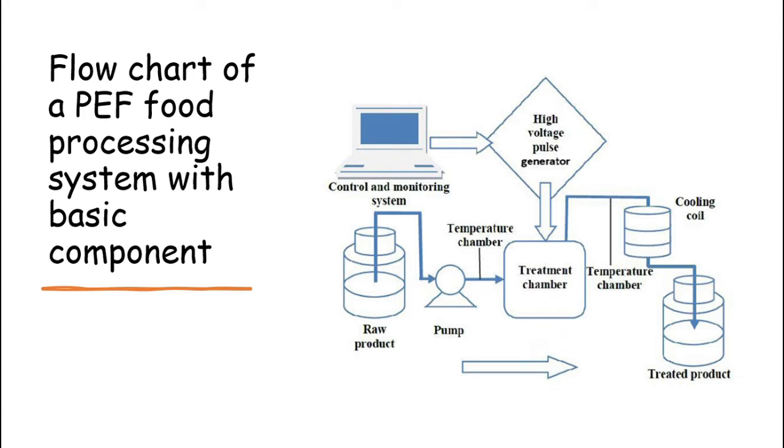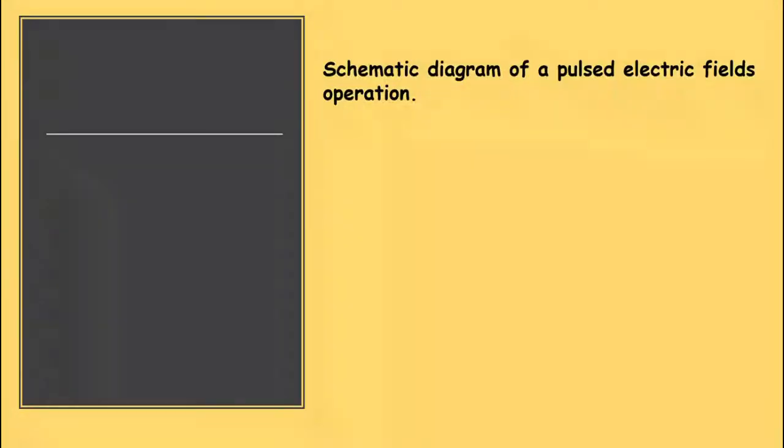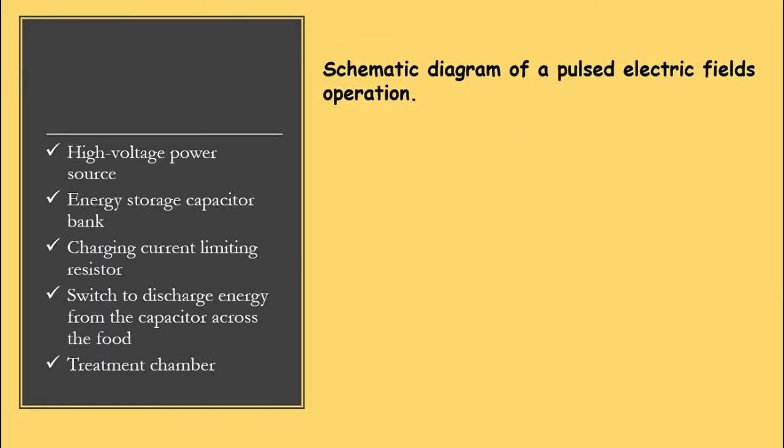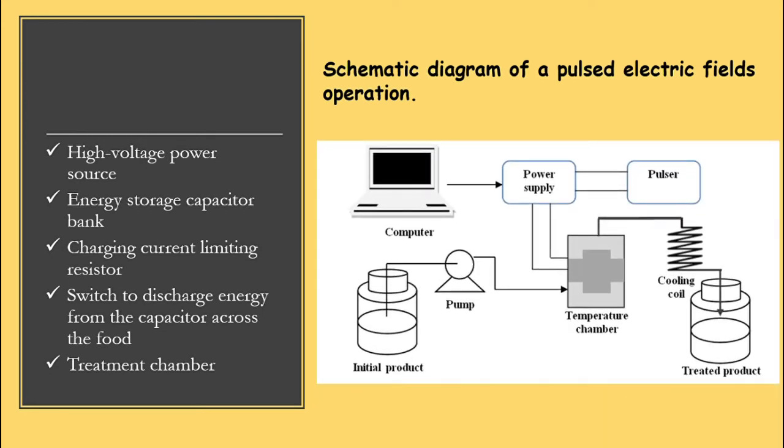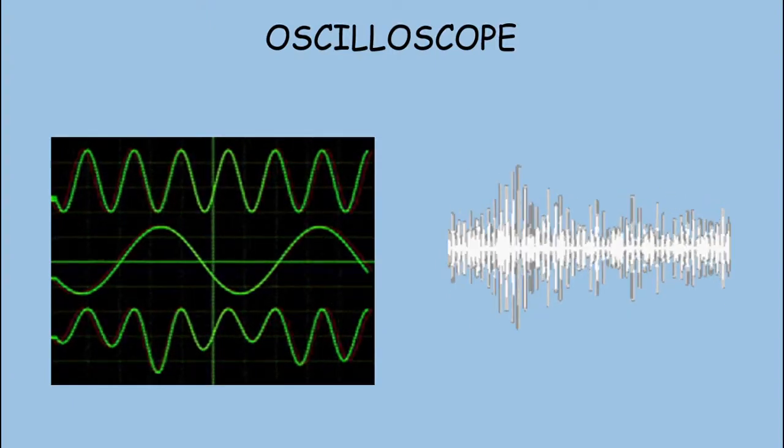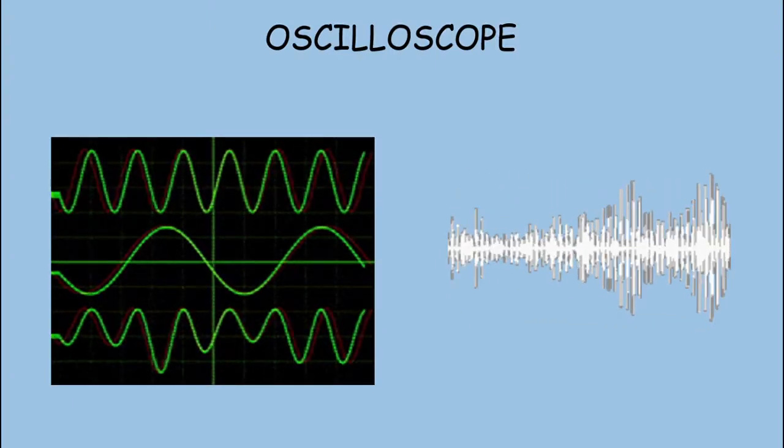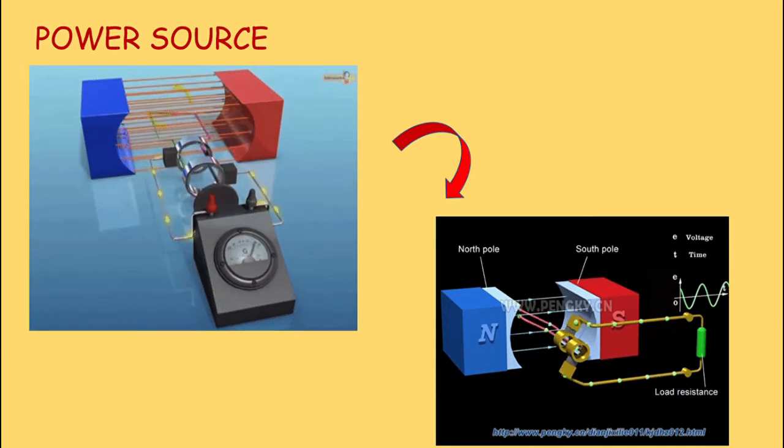A pulsed electric processing system consists of high voltage power source, energy storage capacitor bank, charging current limiting resistor, switch to discharge energy from the capacitor across the food treatment chamber. An oscilloscope is used to observe the pulse waveform. The impulse generation system transfers electric power from a low utility level voltage into pulsed high intensity electric fields. A simplified circuit for generating exponential decay pulses is shown. It consists of a charging and a discharging unit.